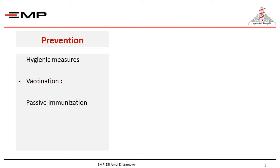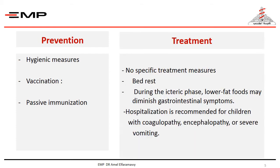Post-exposure prophylaxis can be achieved by passive immunization of exposed susceptible persons with immune globulin or by giving the vaccine. There is no specific treatment for hepatitis A. It is self-limiting — just bed rest.